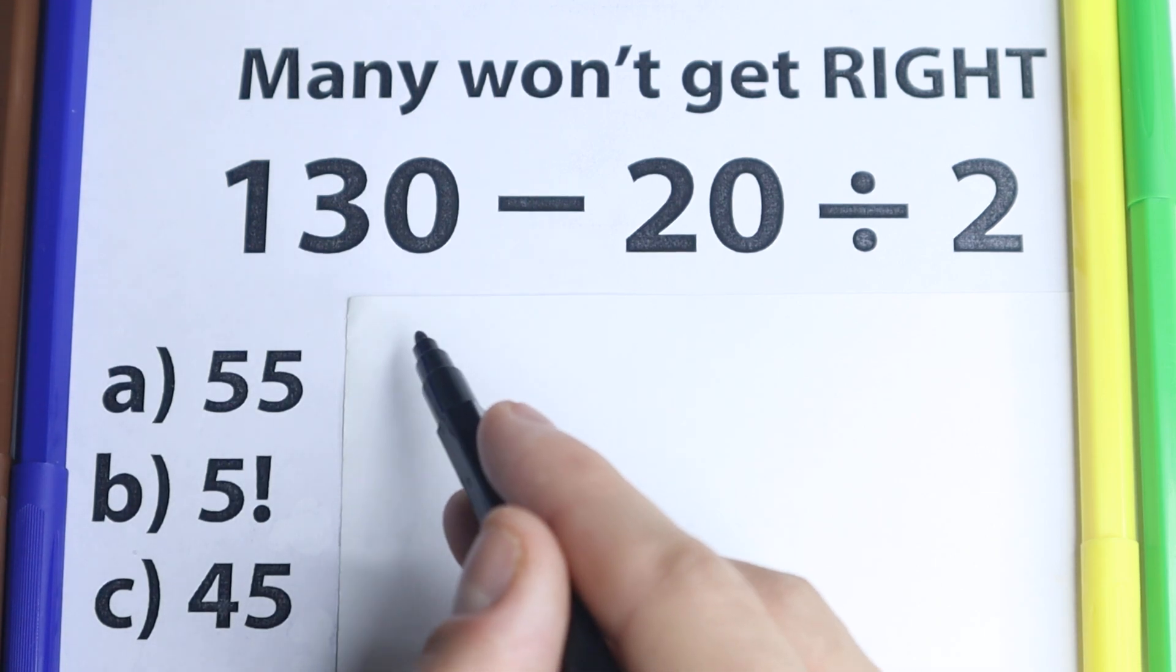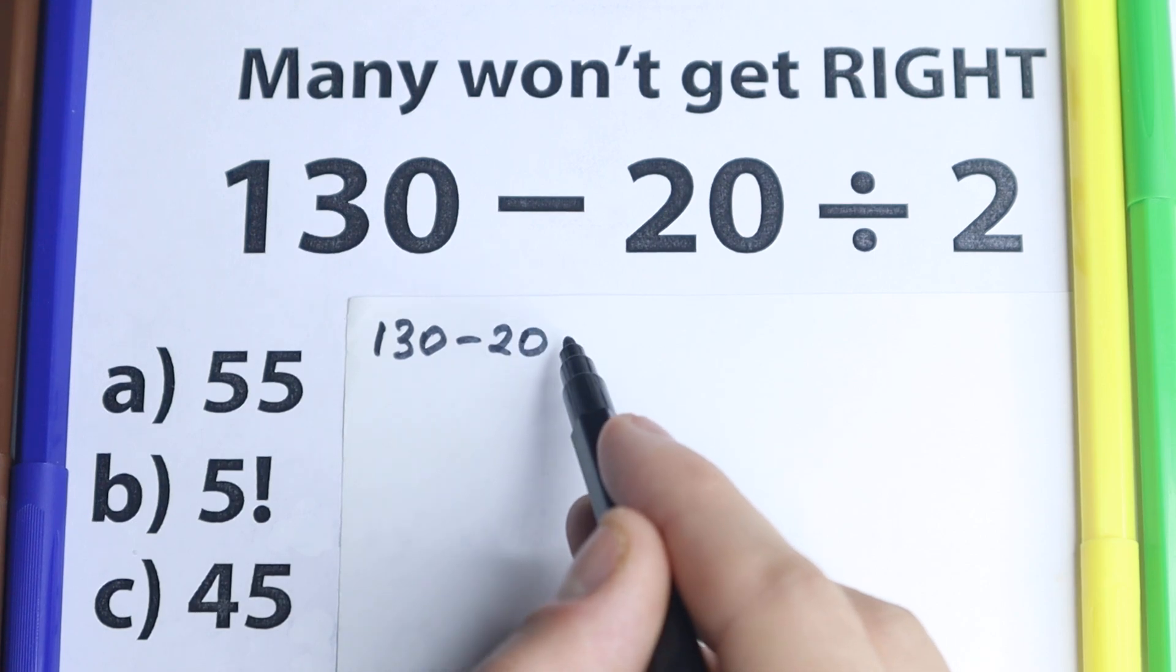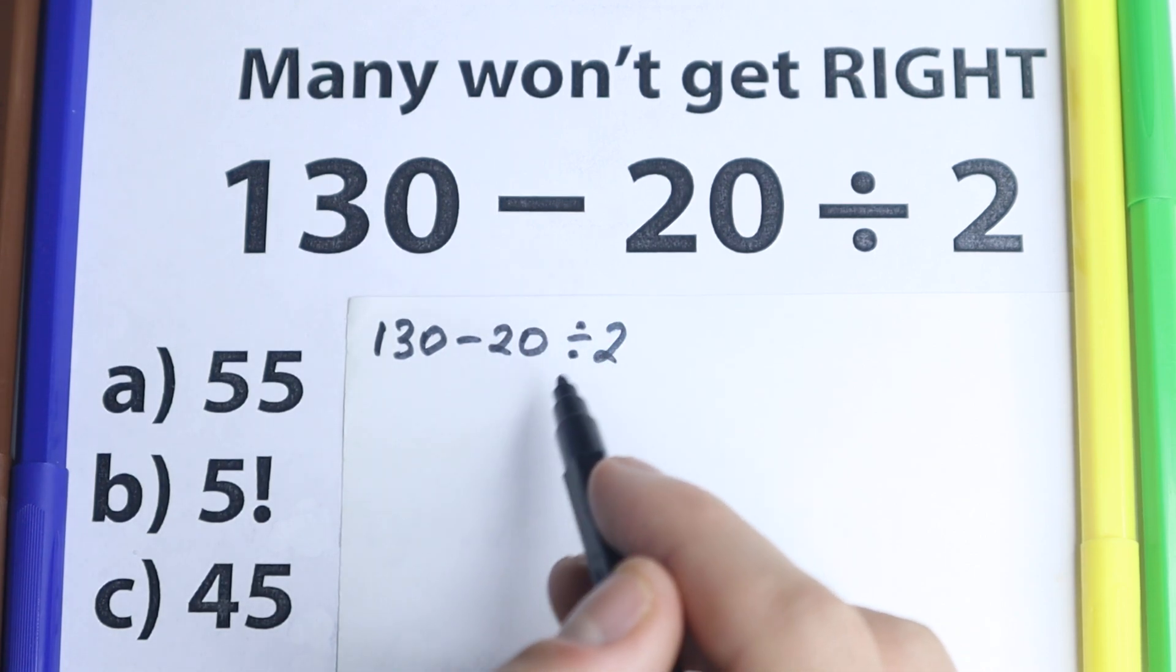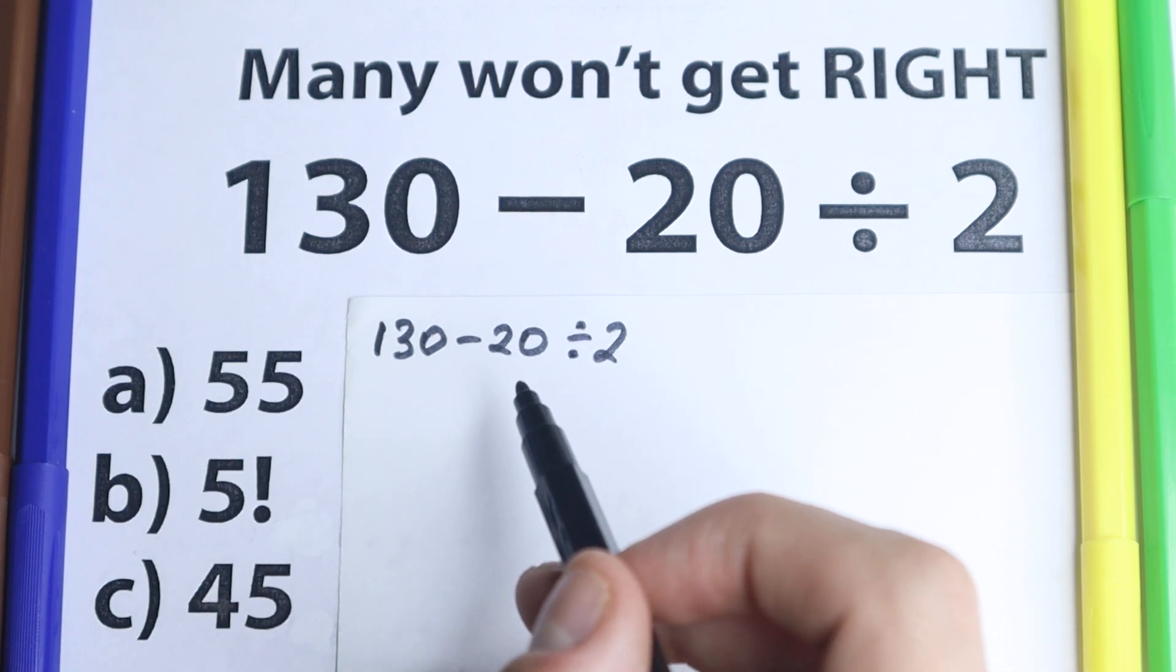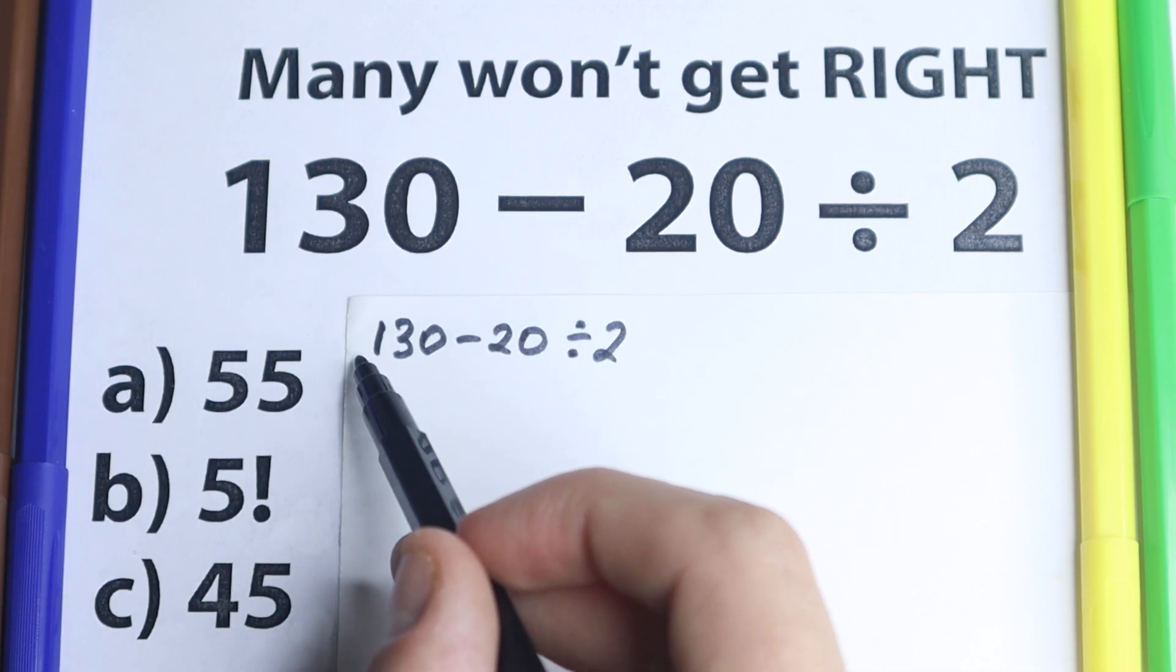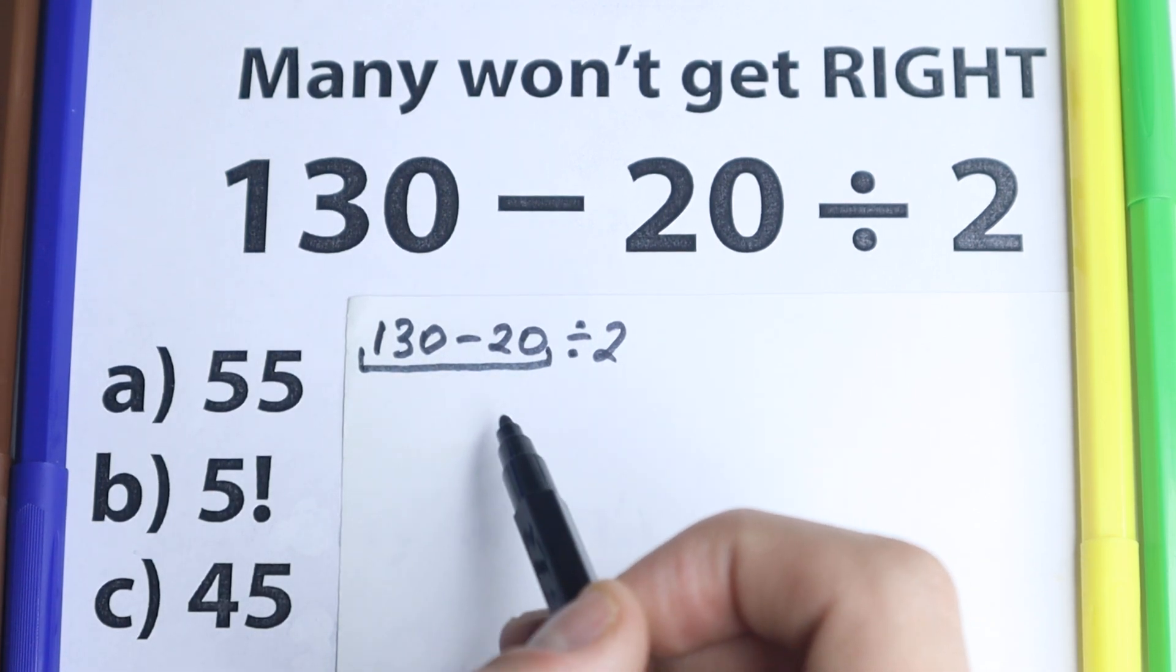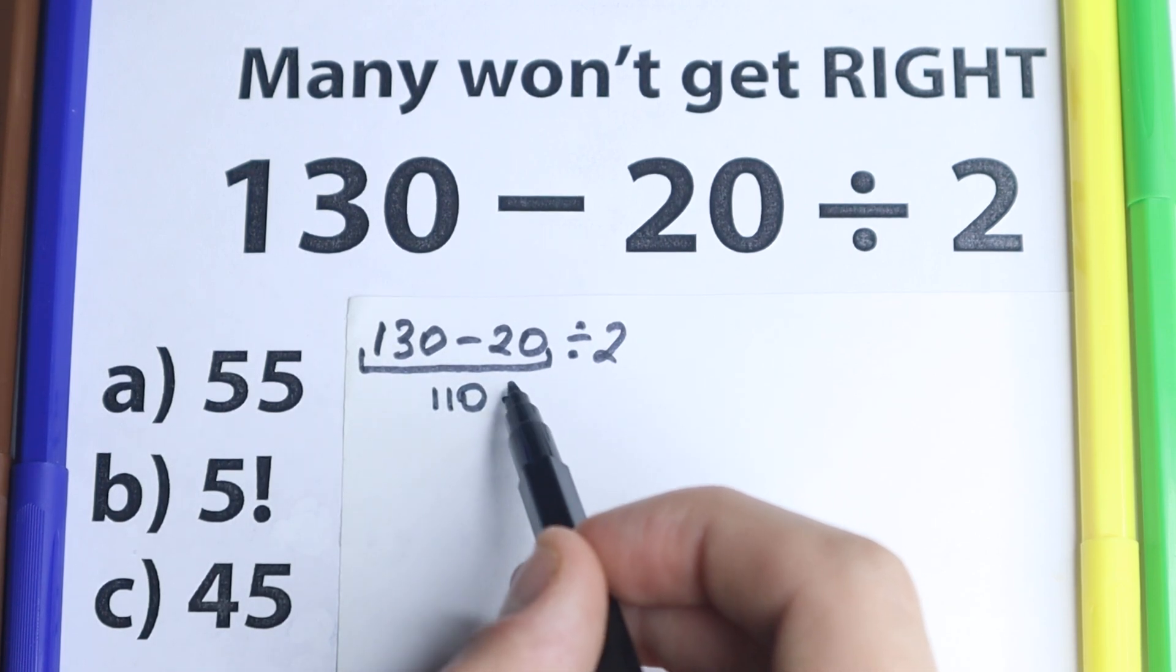Before solving this, I'm going to show you the solution to this problem. 130 minus 20 divided by 2. A lot of students solve it like that, and I don't want to tell that this is correct or incorrect. A lot of students solve it in their obvious way, so they say 130 minus 20 equals 110, and we have this division by 2.